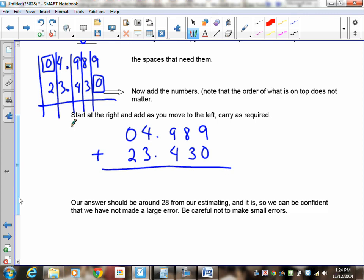Once you have that, you just have to add them as if there were whole numbers. I've got 04.989 and 23.430. Notice I space things out so I don't get messed up. Now you start with the right-hand side. Nine plus zero is nine. Eight plus three is eleven. Put down the one, carry the one. Nine and four gives me thirteen, plus this one is fourteen, put down the four. Bring the decimal straight down. Three and four is seven, and this one is eight. Zero and two is two. My final answer is twenty-eight, decimal four, one, nine.